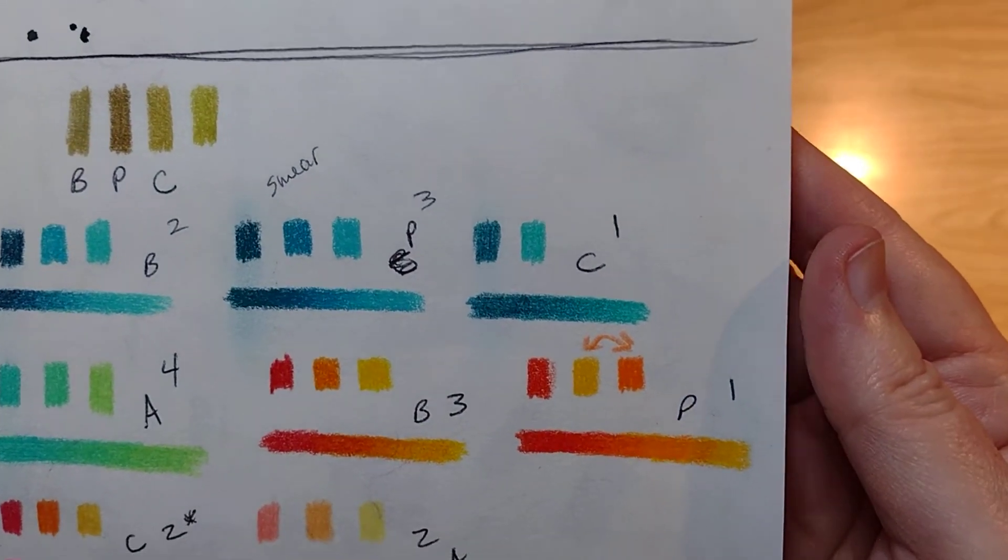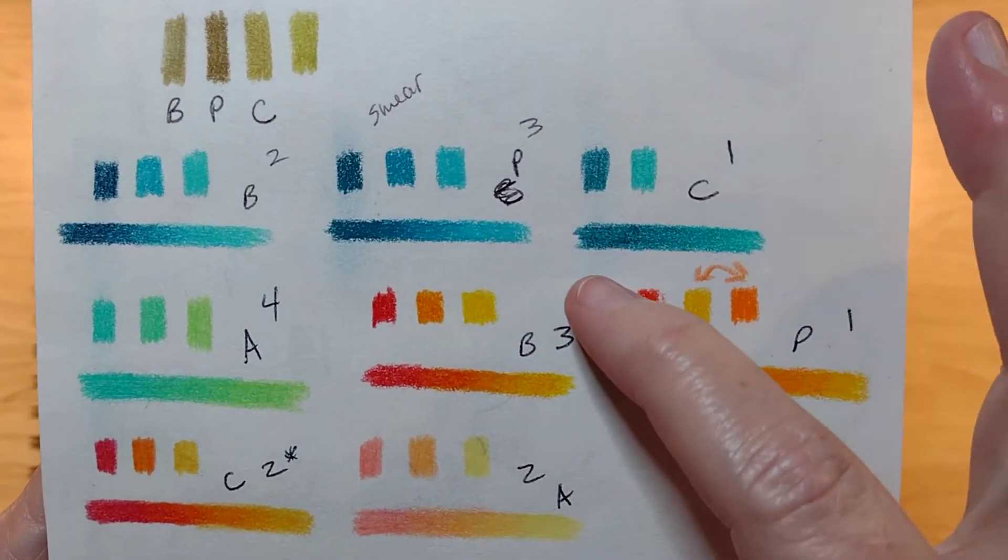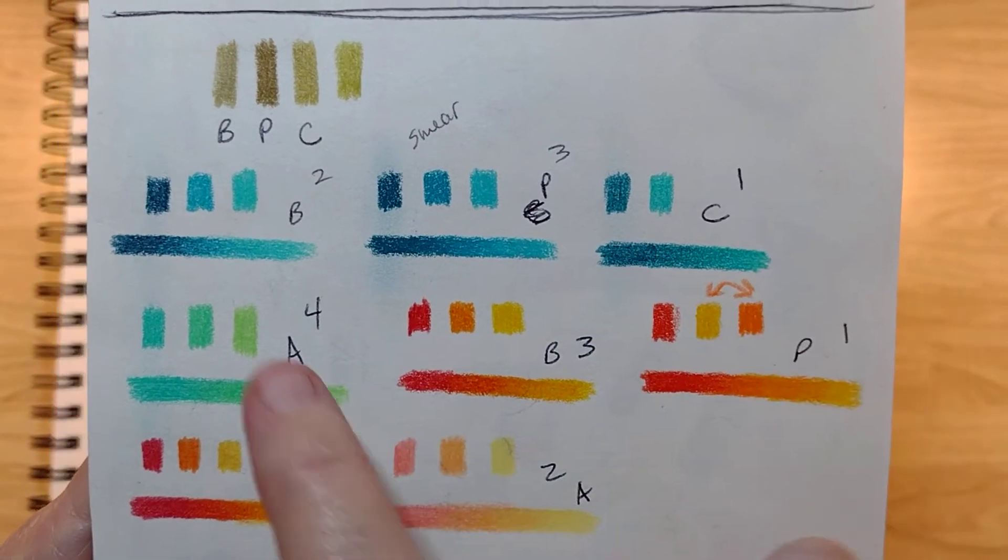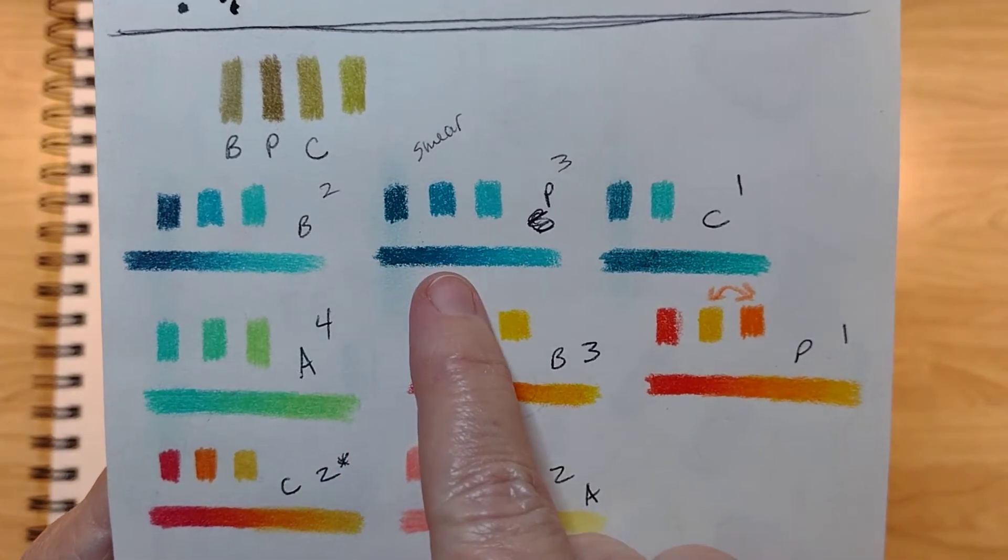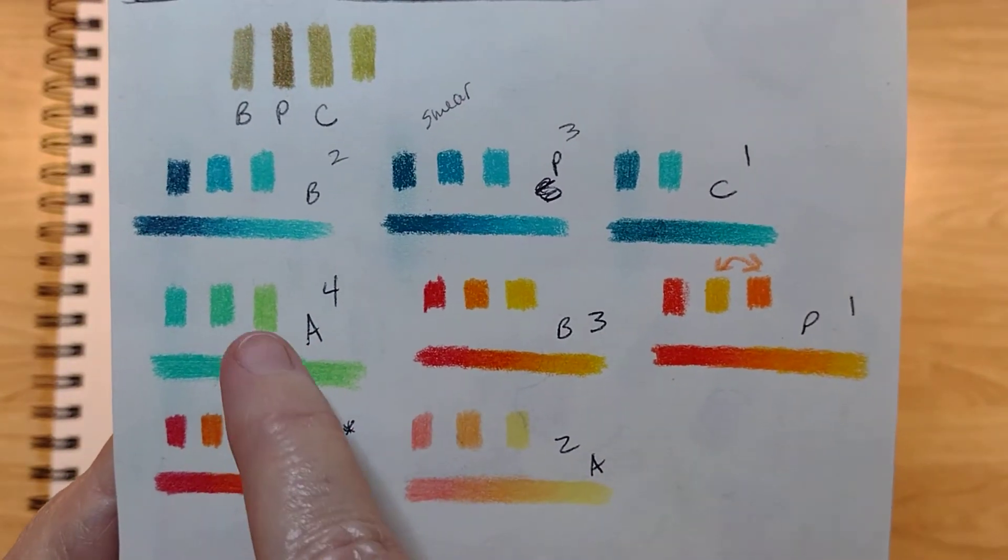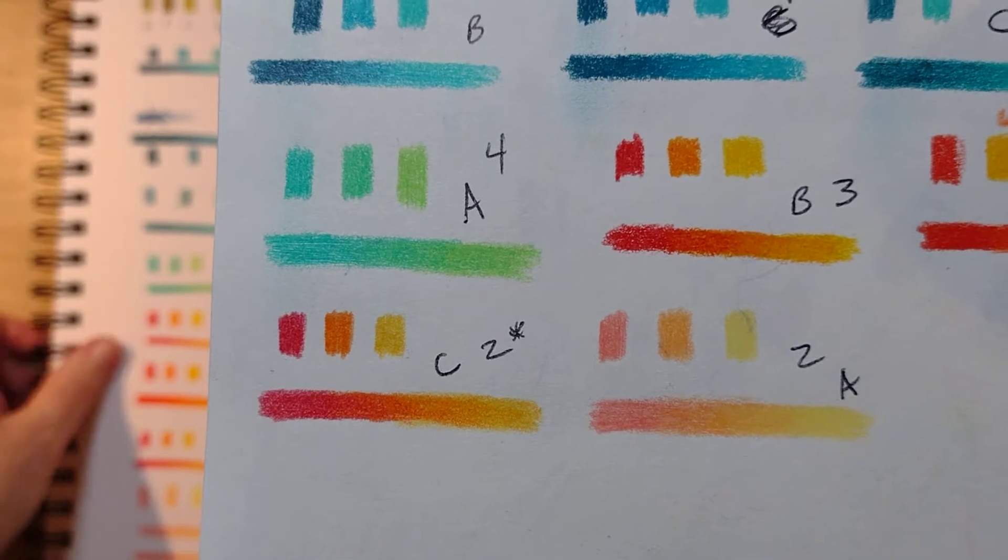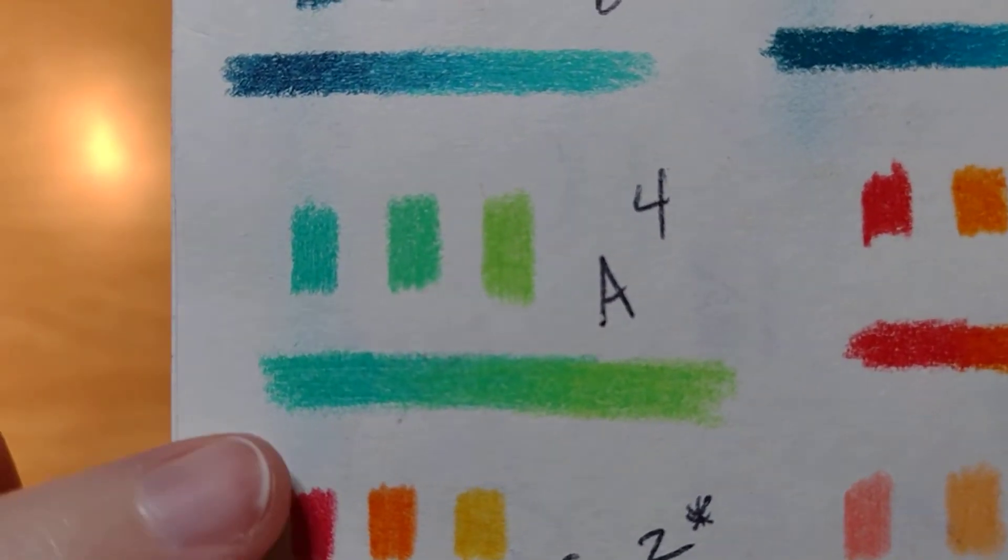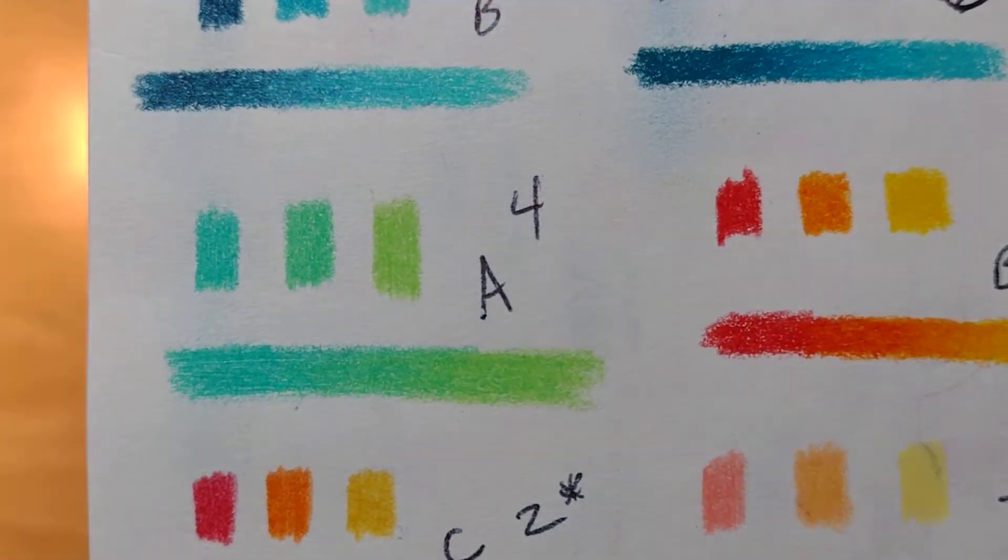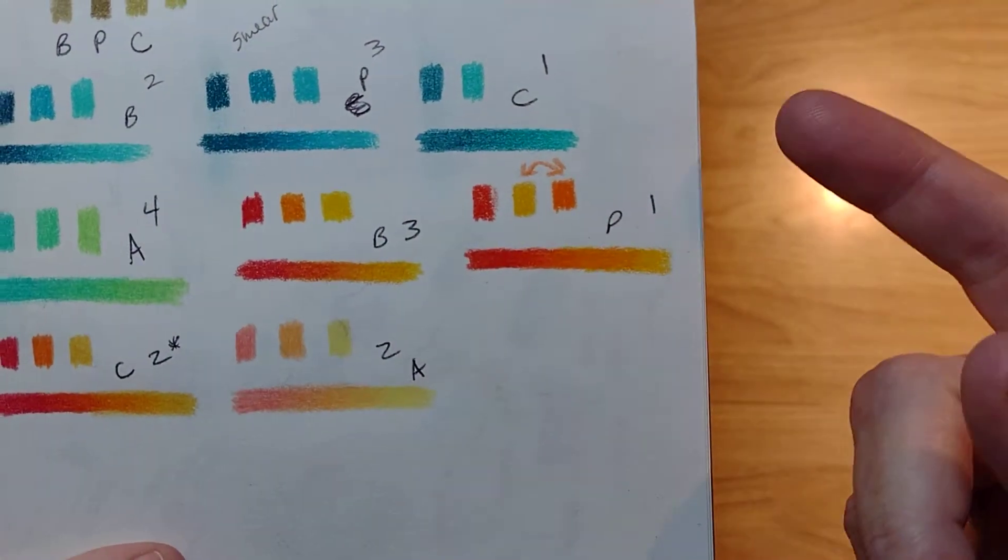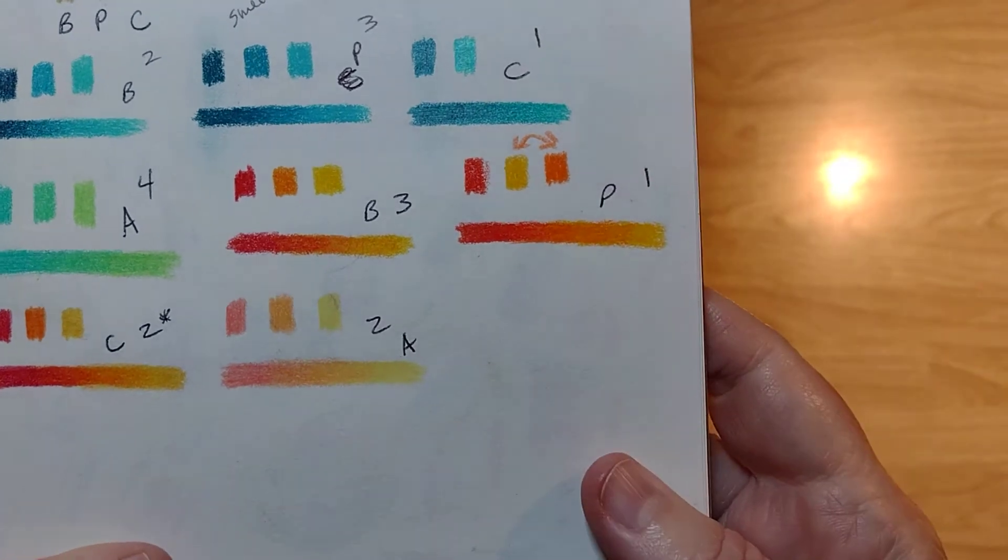On this little drawing paper, which was 70 pounds or 115 GSM's, and this is kind of textury, surprisingly or not surprisingly, I thought that the Crayola was easiest to blend in this category. The Brutfuners came second, Prismacolor third, and the Astras fourth. The Astras leave this little scratchy thing behind, I noticed, in a lot of things.